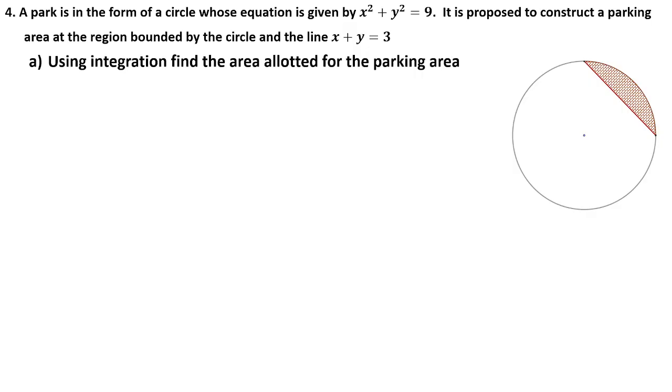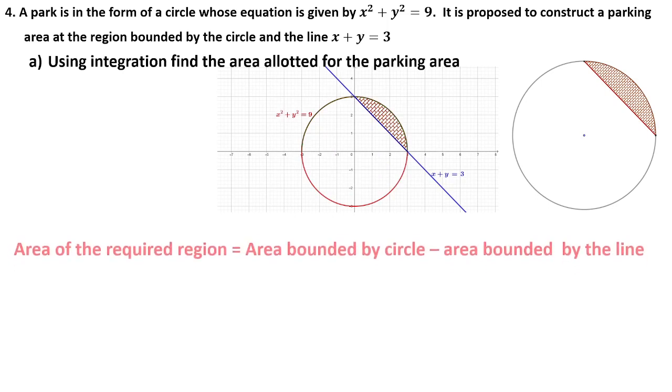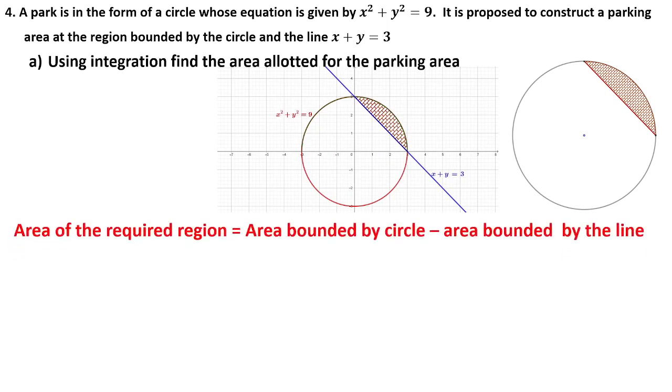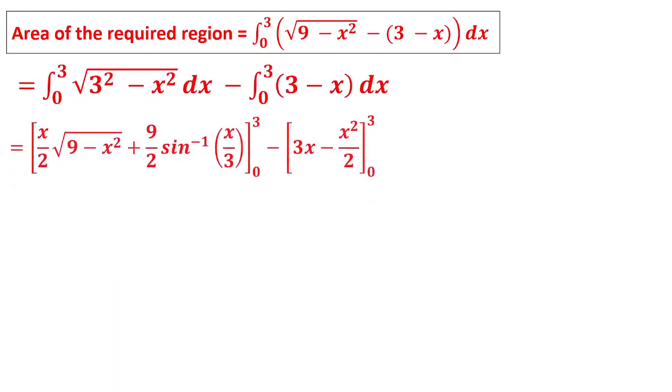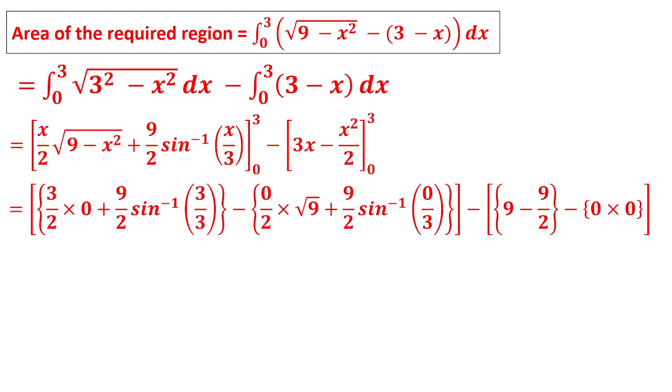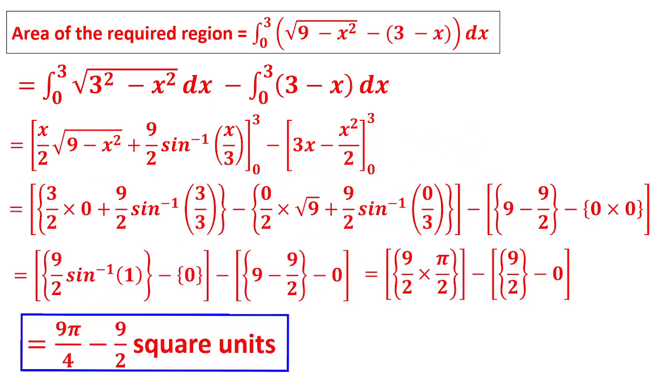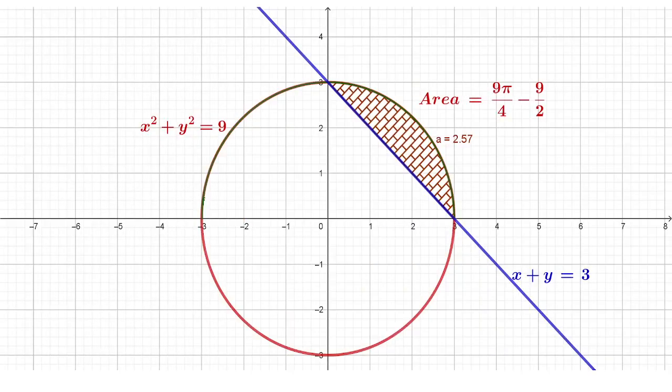Question number 4: A park is in the form of a circle. It is proposed to construct a parking area. Using integration, find the area alerted. From the figure, area of the required region is area bounded by the circle minus area bounded by the line. Integrating 0 to 3, from the circle minus y from the straight line. Using the formula √(A²-X²) and 3-X. Substituting upper limit minus lower limit, the answer is 9π/4 - 9/2.